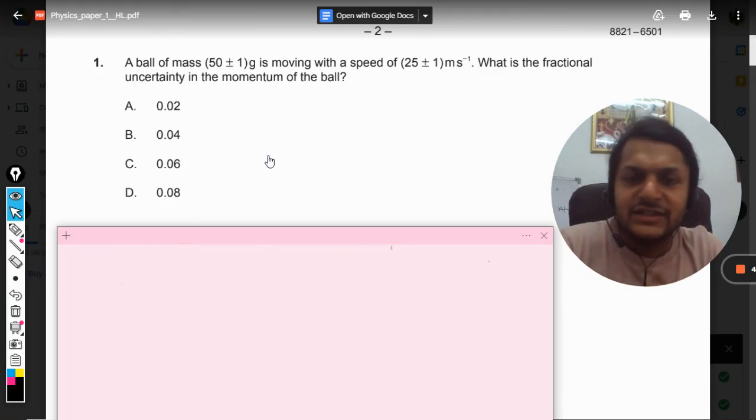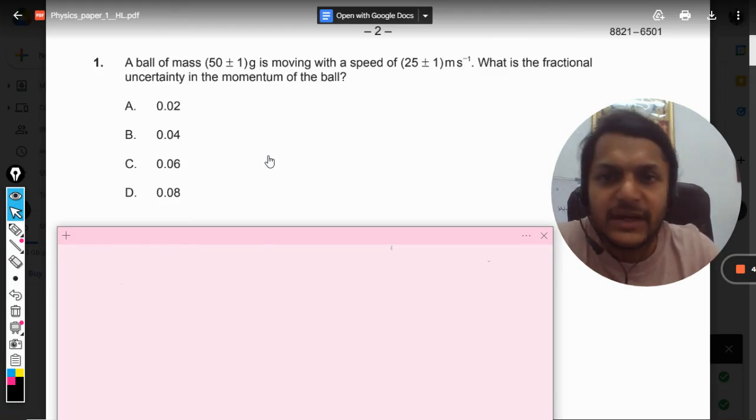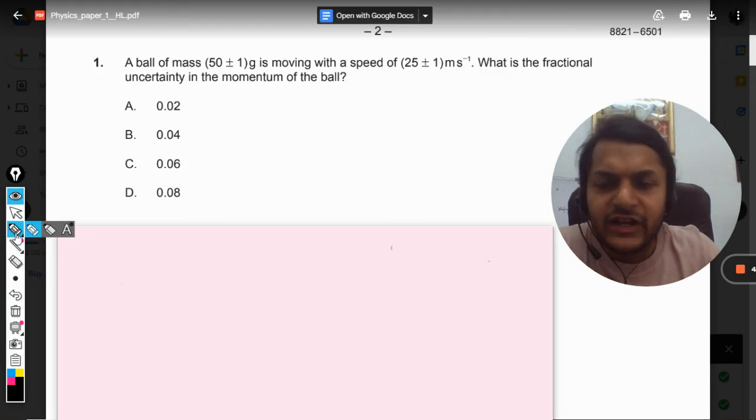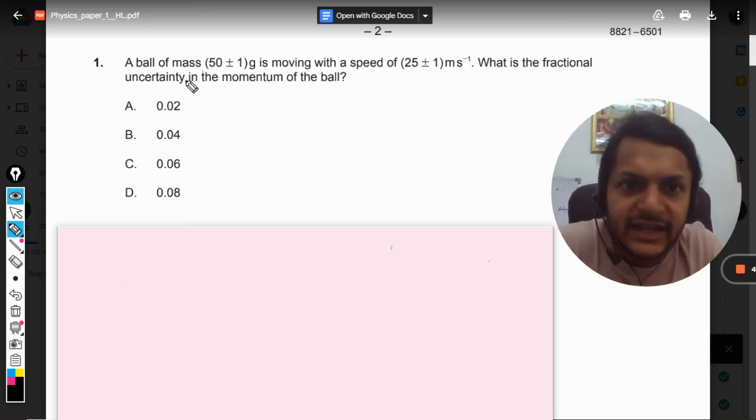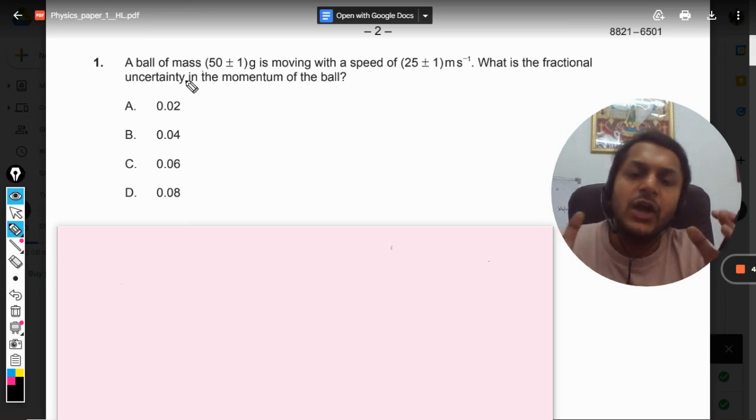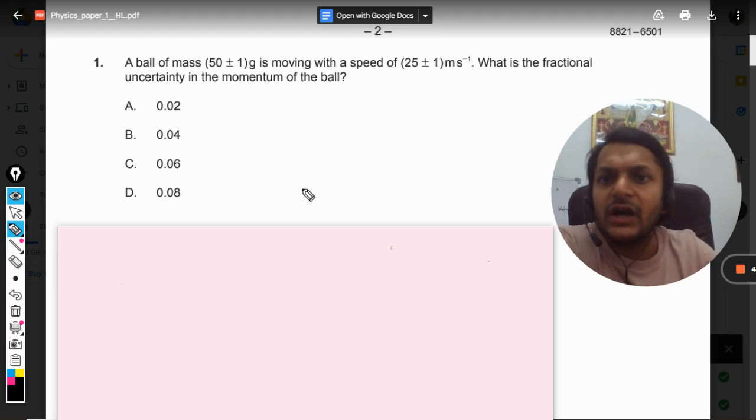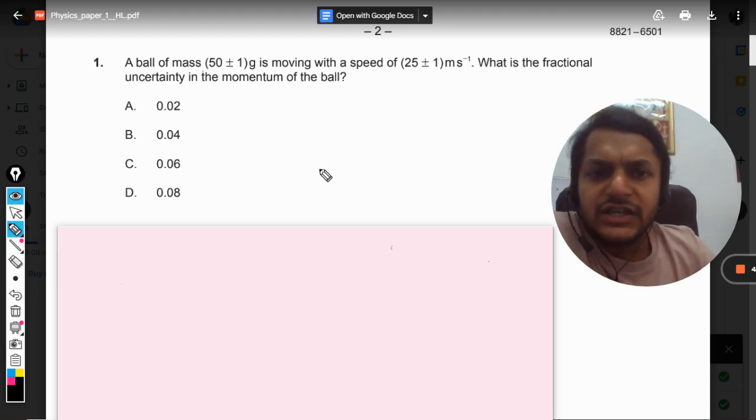Okay, dear students, let's see this question. This question is from chapter number one in physics, very basic. A ball of mass 50 ± 1 gram is moving with the speed of 25 ± 1 meter per second. What is the fractional uncertainty in the momentum of the ball?